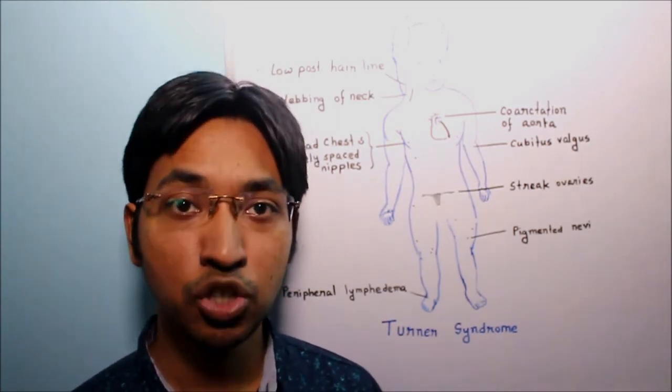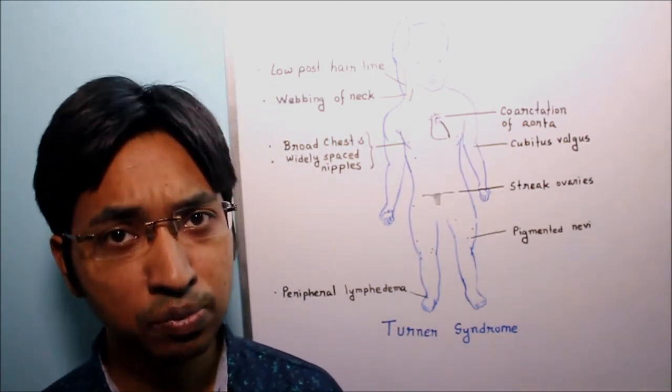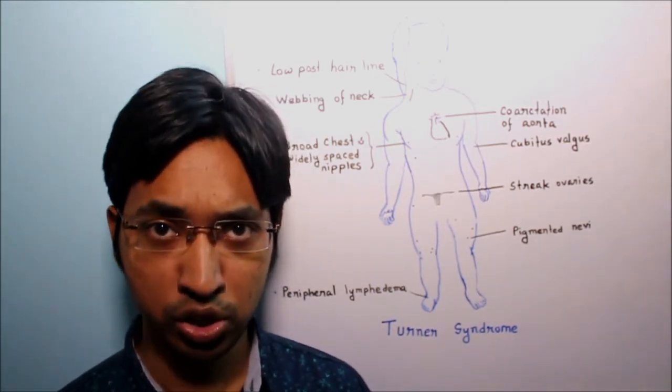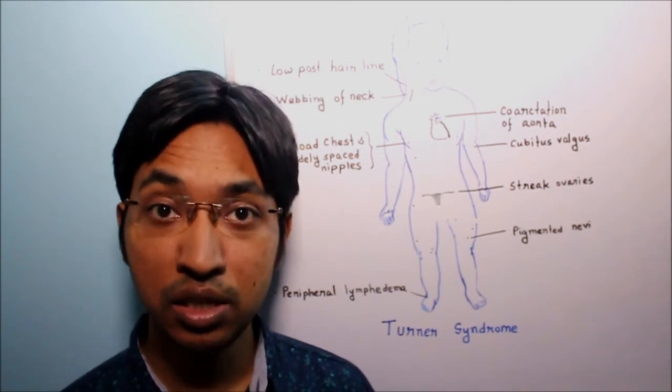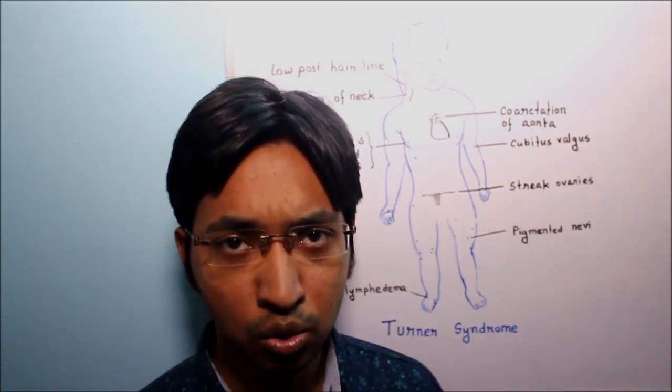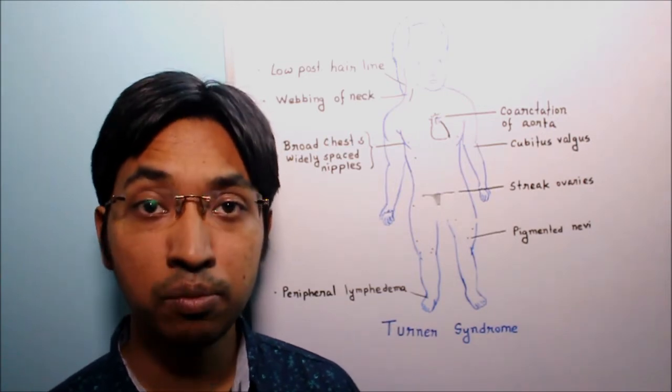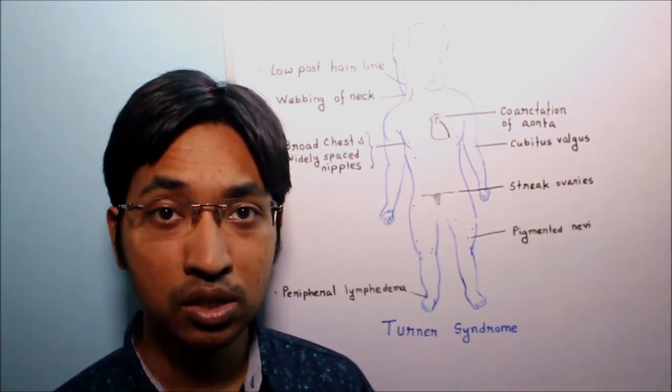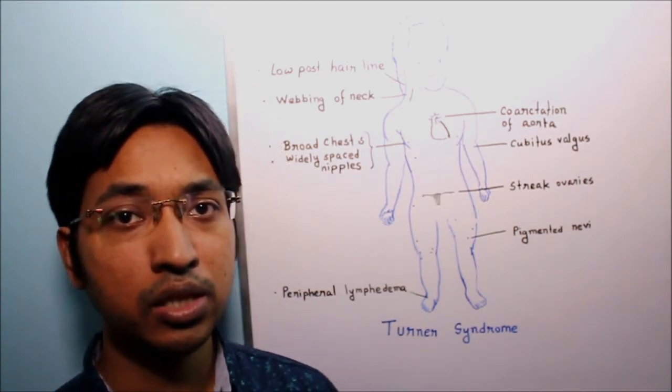If a female child shows the typical features of Turner syndrome for example short stature, webbed neck, widely spaced nipples, Turner syndrome may be suspected. Whenever Turner syndrome is suspected we must confirm the diagnosis and karyotyping test is done to confirm the diagnosis.